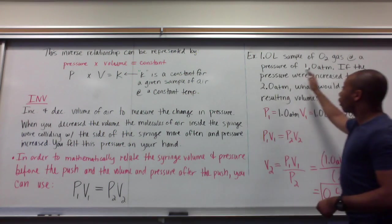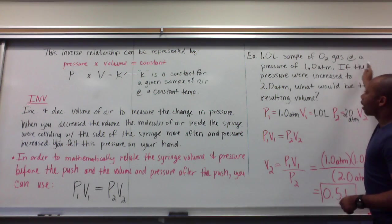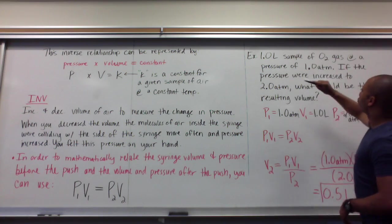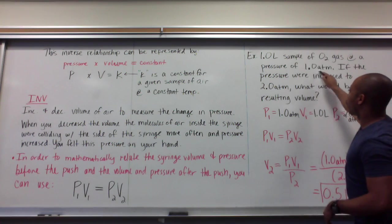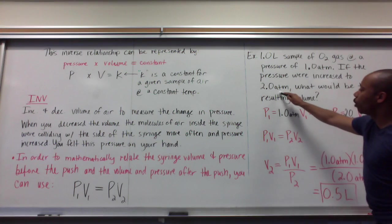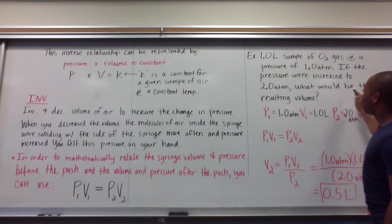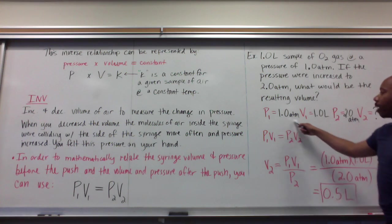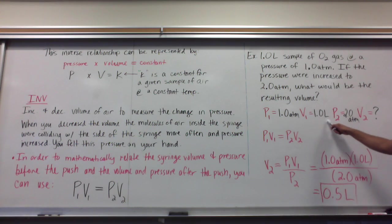Here's an example. A one liter sample of oxygen gas at a pressure of one atmosphere. If the pressure were increased to two atmospheres, what would be the resulting volume? So my initial pressure is one atmosphere. My initial volume is one liter. I increase this pressure to two atmospheres and I want to know, well, what is the corresponding volume?